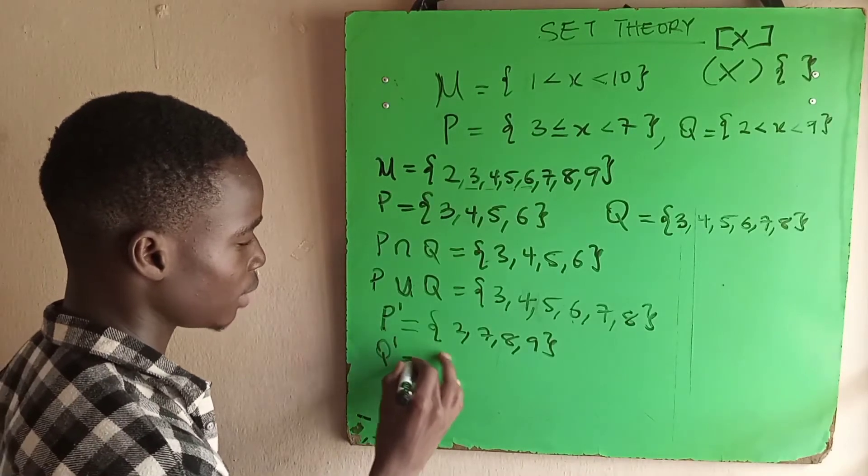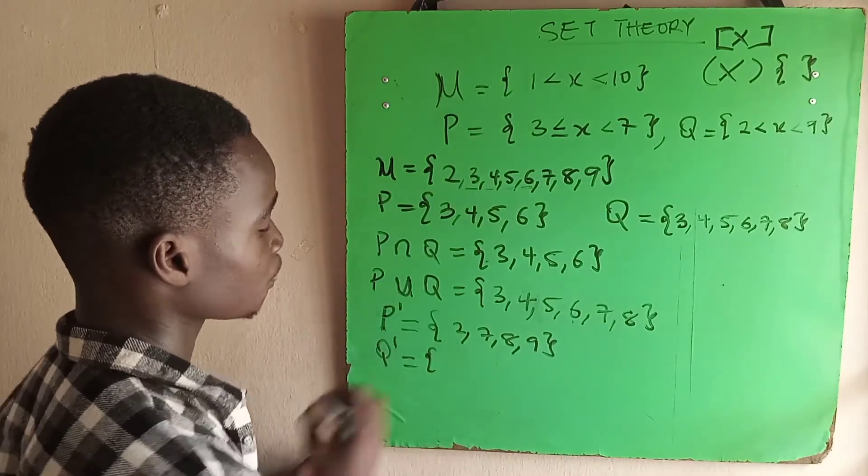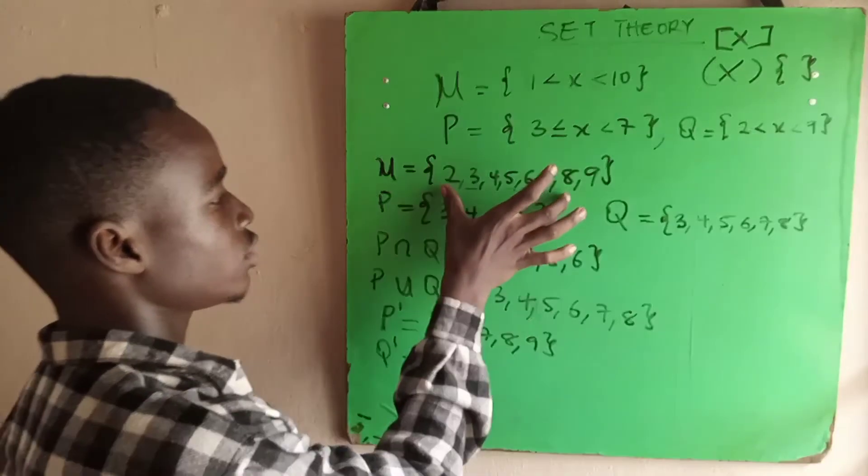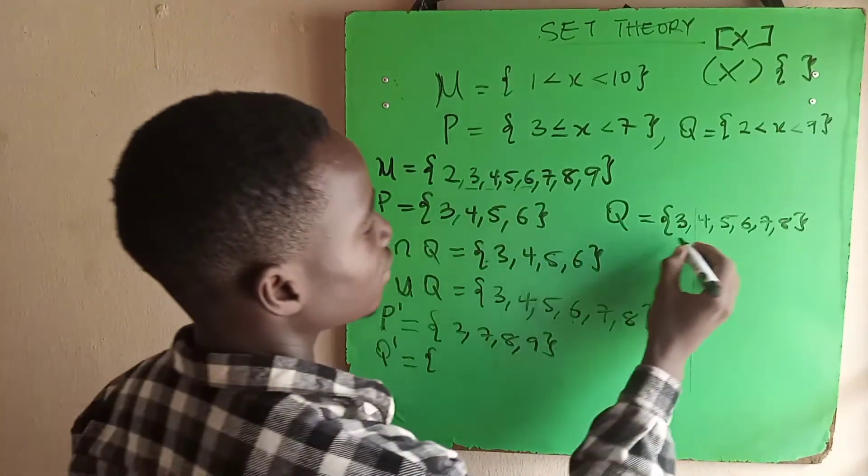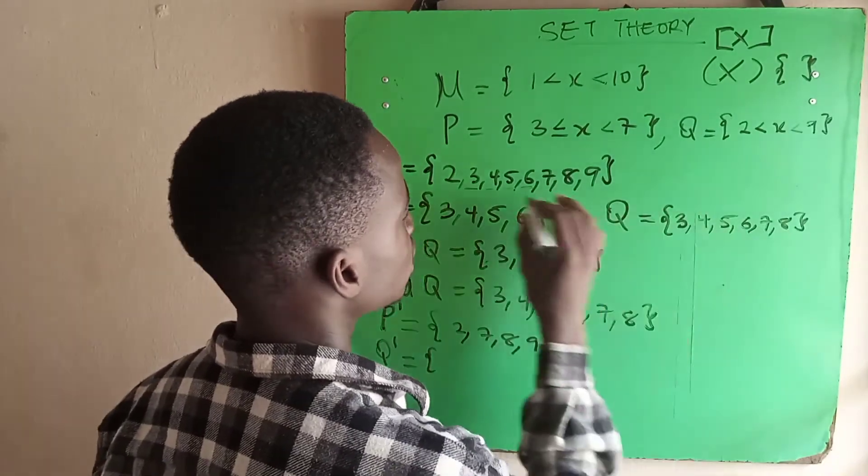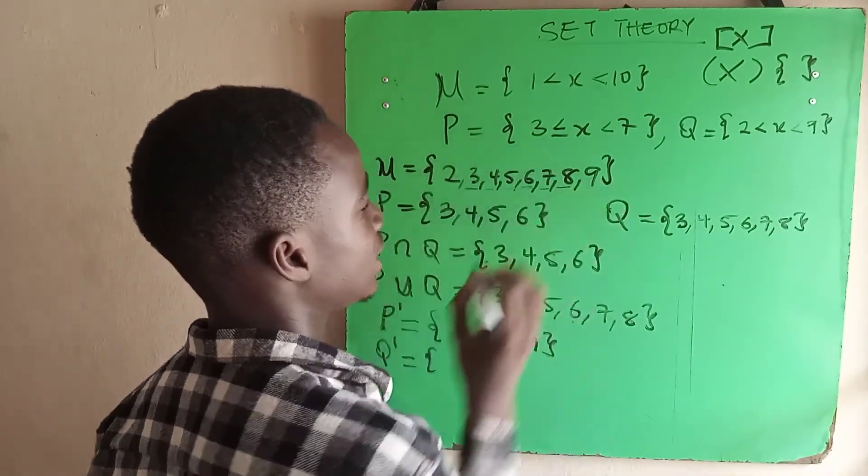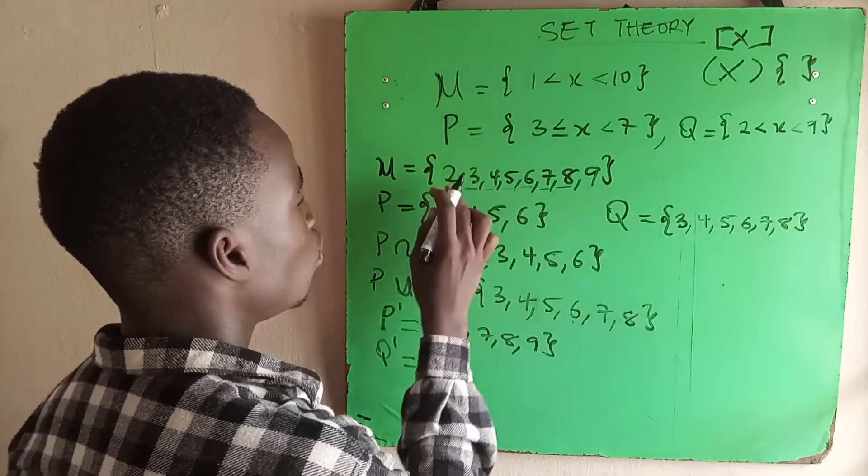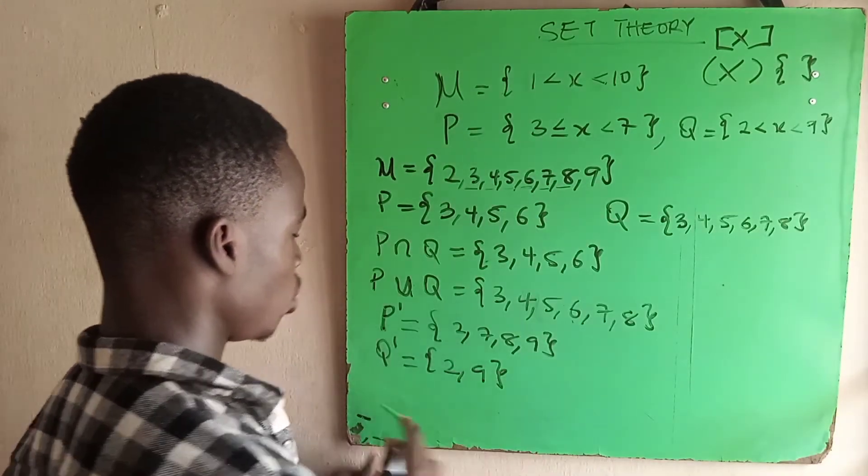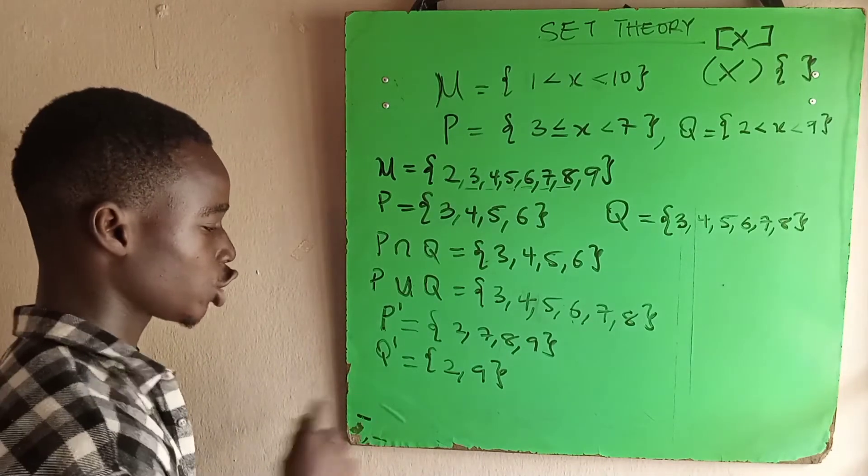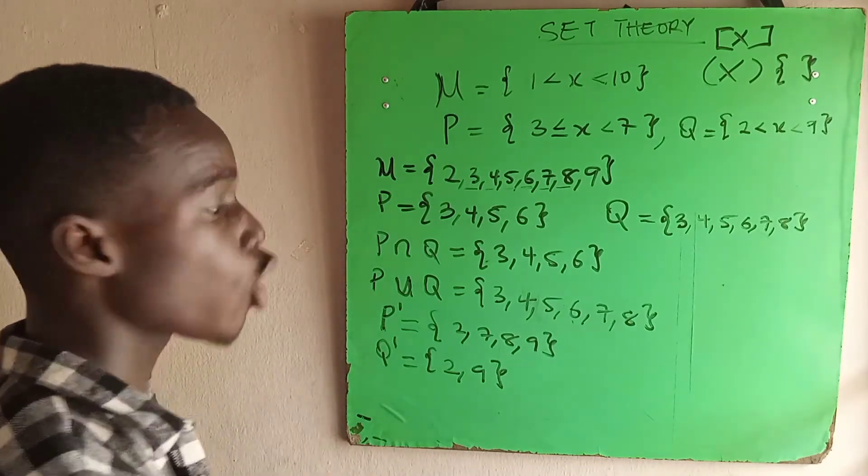The next one is Q complement. Look for what is in the universal set that is not in Q. We have 3, 4, 5, 6, 7, 8 in Q. So what is left is 2 and 9. These are Q complement or Q prime.